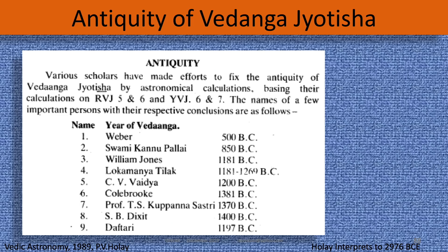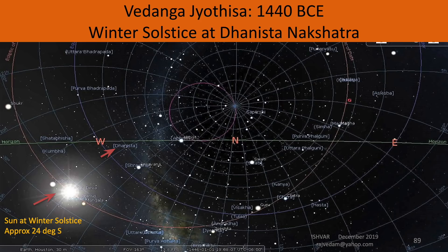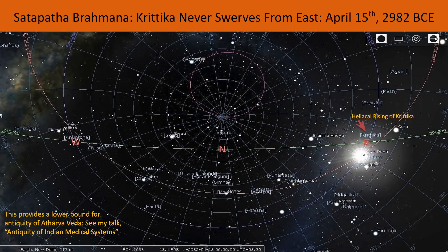Looking at the antiquity of Vedanga Jyotisha: it is dated to 1440 BCE because of the presence of winter solstice in Dhanishtha Nakshatra. Vedanga Jyotisha talks about the winter solstice in Dhanishtha Nakshatra, which today's planetarium software can simulate, showing that date is actually 4400 BCE. If you look at Shatapatha Brahmana, there is a statement that Kritika never swerves from the east, and from the heliacal rising of Kritika that date is 2982 BCE. I am showing all this to demonstrate the antiquity of the Indian civilization in a Pan-Indian model — this is not a North Indian or a South Indian model.